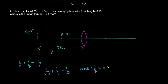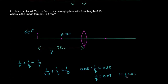And I'll keep the 1 over Q here. 1 divided by 10 is 0.1. In order to isolate 1 over Q on one side, we subtract 0.05 from 0.1, and that gives us 0.05. So 1 over Q equals 0.05. Now we want to solve for Q. We multiply through and divide both sides by 0.05, and we get Q equals 20 centimeters.